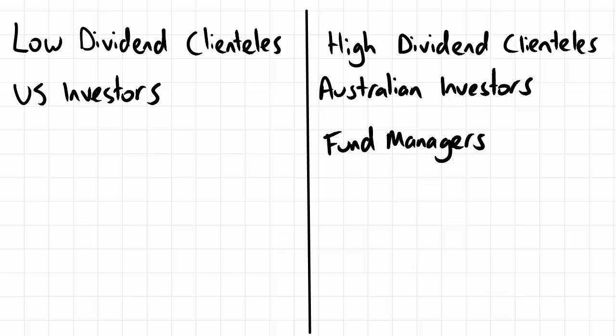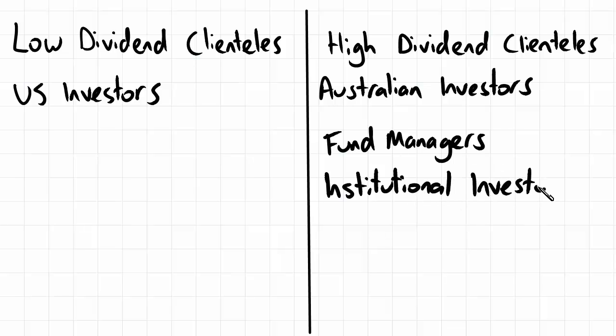At the same time, there are also a lot of institutional investors who have tax exemptions. For many institutional investors, dividend income is completely tax exempt as opposed to capital gains. So for them, it's really no question — high dividend shares are better than low dividend shares.